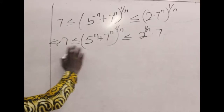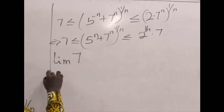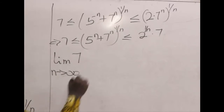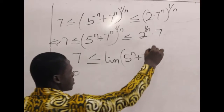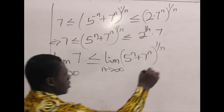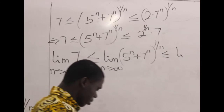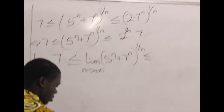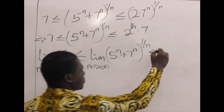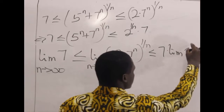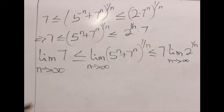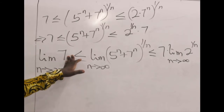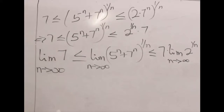So we now find the limits of all three parts. The limit of 7 as n approaches infinity is less than or equal to the limit of (5^n + 7^n)^(1/n), which is less than or equal to the limit of 2^(1/n) · 7 as n approaches infinity. One significant property of limits is that the limit of a constant equals that same constant — there is no variable for substitution.